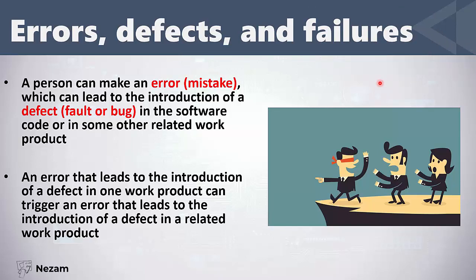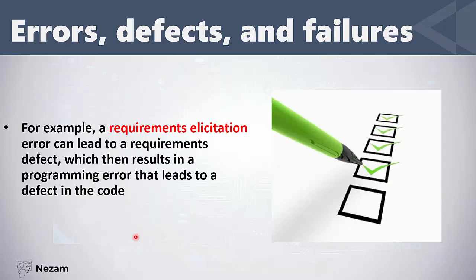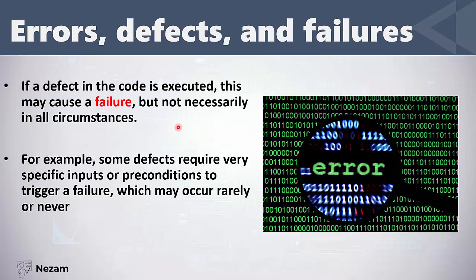Now let's talk about the difference between errors, defects, and failures. A person — such as a developer — makes an error or mistake, which can lead to a defect, fault, or bug in the code or work product. For example, during requirements elicitation, if the product owner makes an error, that leads to a defect in the requirements. This defect causes a programming error, which causes a defect in the code — so the original error in requirements elicitation leads to a defect in the code.